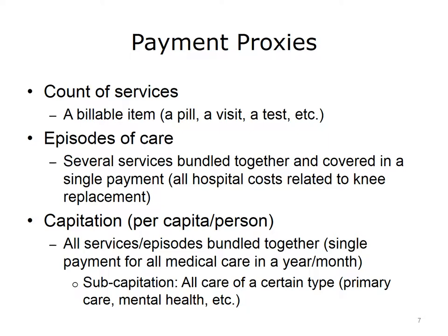A third example of a payment model is the capitation model, which means payment per capita or per person. In this approach, a single payment is made per person regardless of how many services or episodes they need. It's also possible to capitate by type of service, called subcapitation. For instance, there may be a single payment for primary care or mental health care per month to handle any services that might be needed.